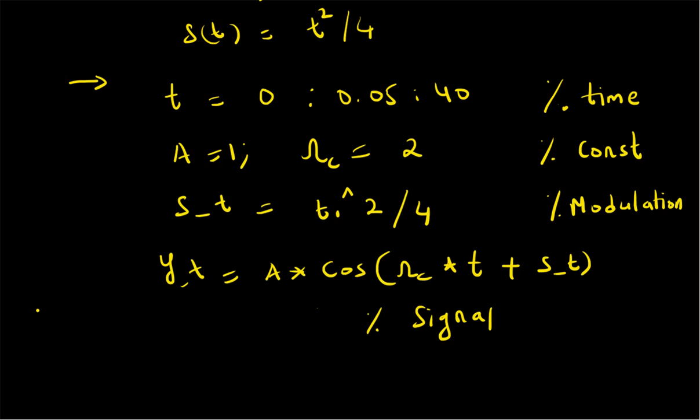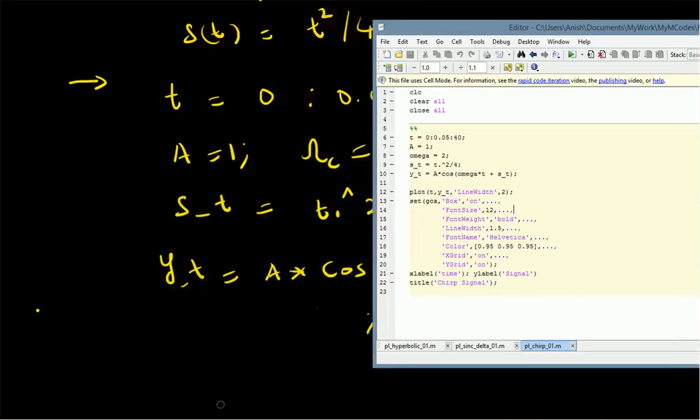For writing the MATLAB code, first we create the time vector with values from zero to forty seconds and with the time interval equal to zero point zero five. We define the constants A equal to 1, omega_c equal to 2, and the modulation s(t) equal to t squared divided by four. Then we define the function y(t) equal to A times cos of (omega_c * t + s(t)) to generate the signal.